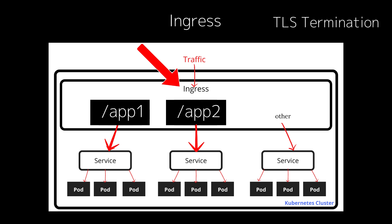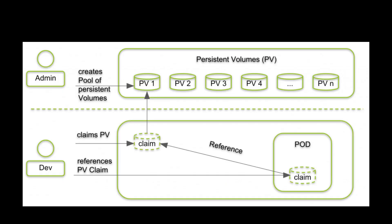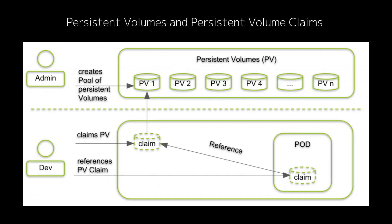TLS termination means that the Ingress controller decrypts encrypted HTTPS traffic before passing it to the backend services. This is important because it offloads the task of managing SSL/TLS encryption from your application pods. The Ingress controller takes care of SSL certificates and decryption, ensuring that traffic is secure when it enters the cluster, handling all the SSL handshakes and traffic decryption.